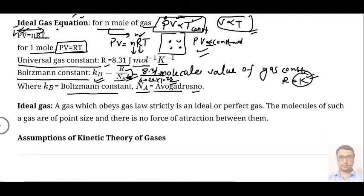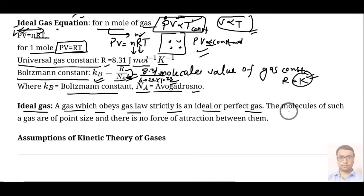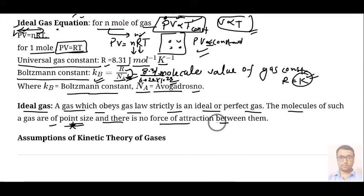After that, what is an ideal gas? A gas which obeys gas laws strictly is an ideal gas or perfect gas. The molecules of such a gas are of point size and there is no force of attraction between gas molecules — there is no intermolecular attraction force.